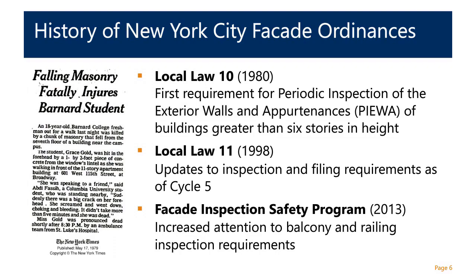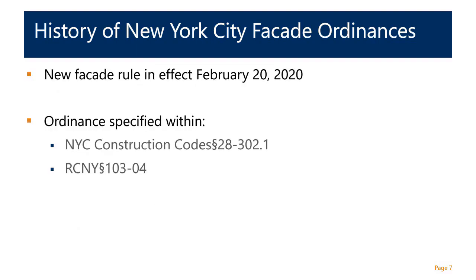Later, in 1998, Local Law 11 was enacted, requiring inspections not just of street-facing facades, but all off-street facades as well. The more recent Facade Inspection Safety Program, enacted in 2013, also increased attention to balcony and railing inspections. The current iteration was amended on February 20th of this year with new amendments that we will detail throughout the presentation.